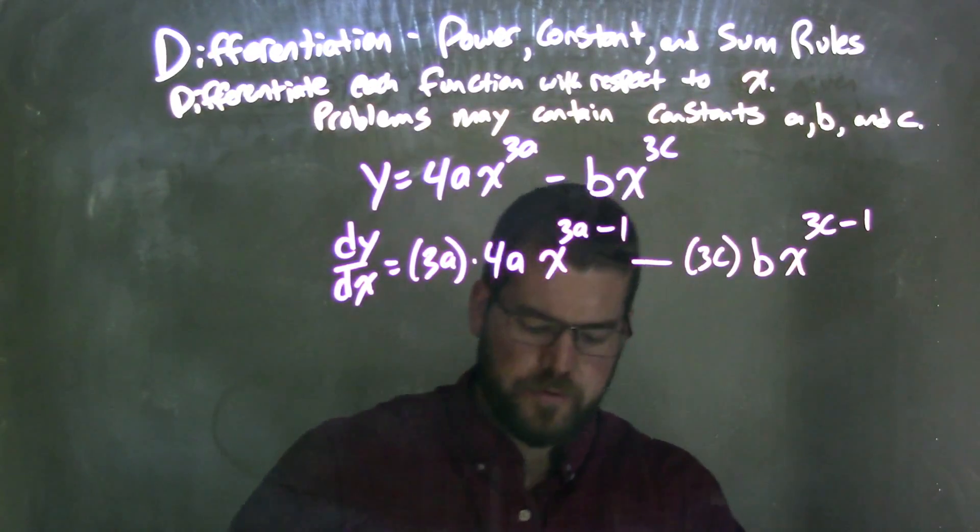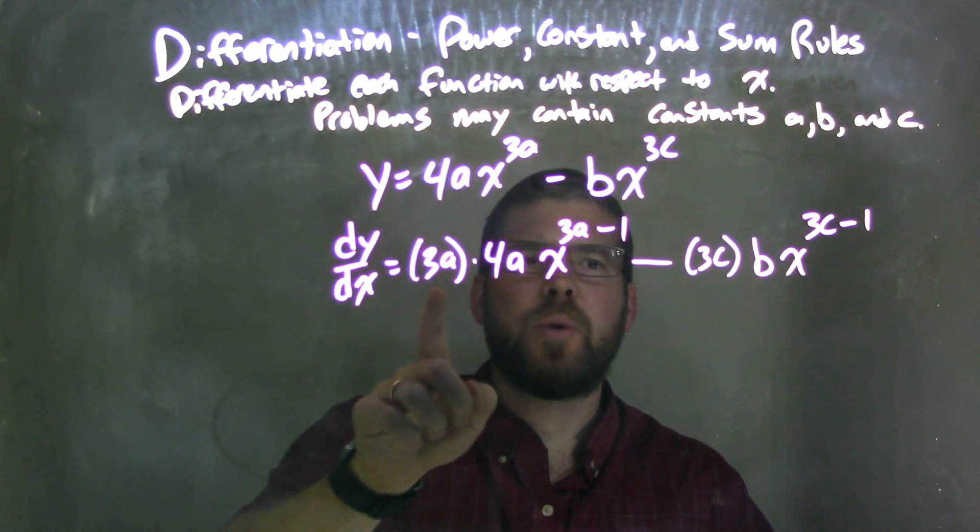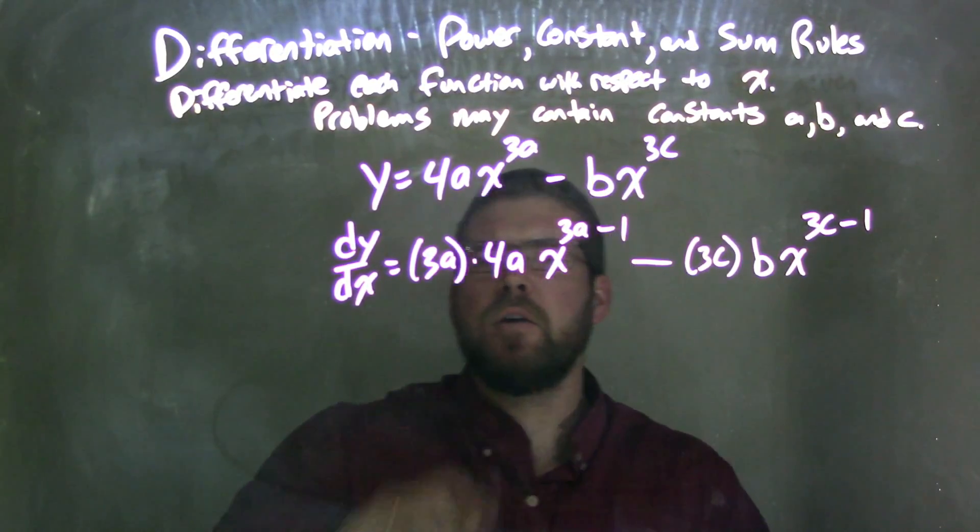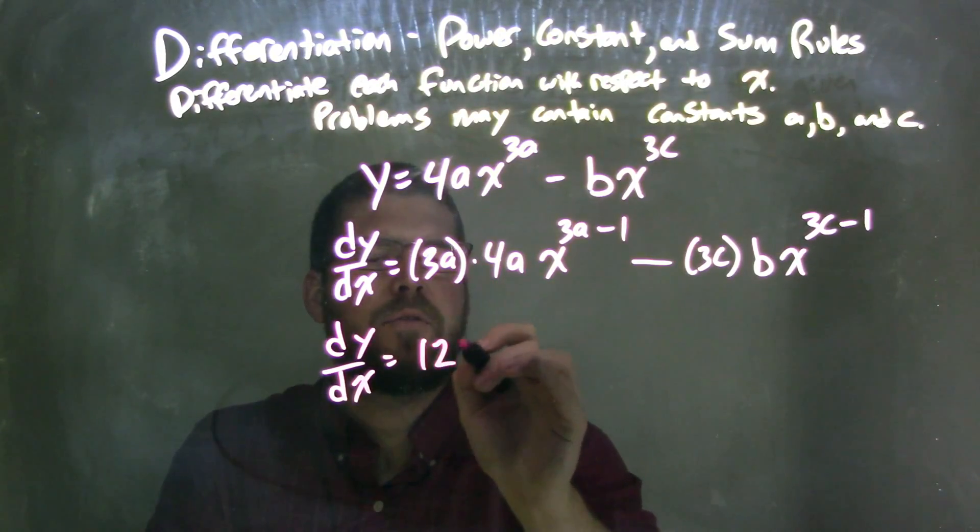So now I want to simplify this. Well, to simplify it, I know I can multiply my numbers out here across. So I know I can do my 3, so dy dx here. 3 times 4 is my 12.